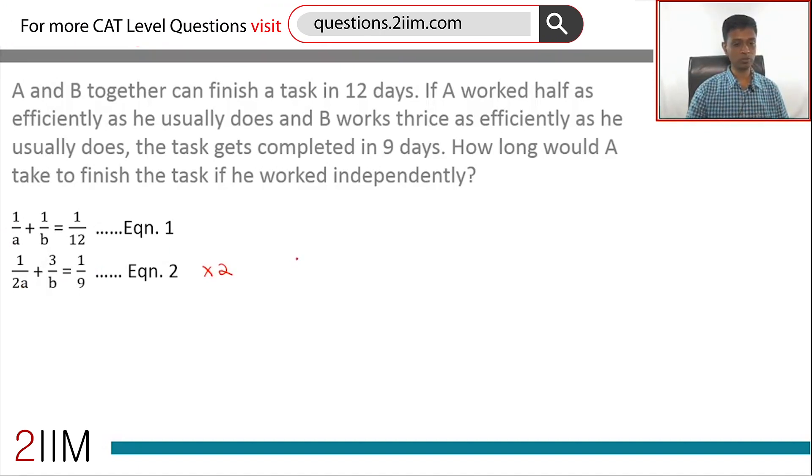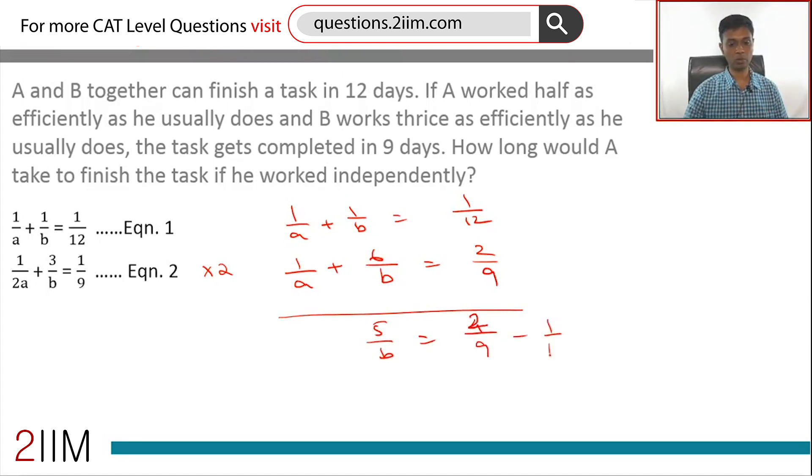We'd have 1/a + 6/b = 2/9. First equation has 1/a + 1/b = 1/12. We subtract one from the other: 5/b = 2/9 - 1/12. The LCM is 36: 8/36 - 3/36, which is 5/36. So 5/b = 5/36, or b = 36.